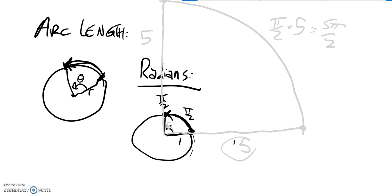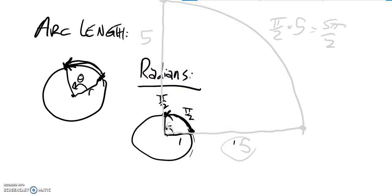So arc length, the way that I calculate arc length, I can just take my radius, I can multiply by my angle, as long as that is in radians. Because that's what radians are.